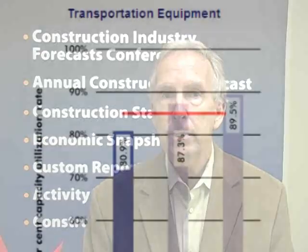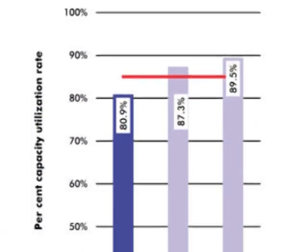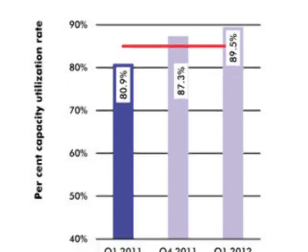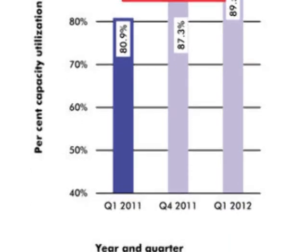All of this is somewhat academic right now because very few industries are operating at 85% or higher — with one notable exception, and that's transportation equipment, which is dominated by motor vehicles. That industry is up close to 90% of capacity, and already we're hearing about some major investment plans from some of the major automakers.